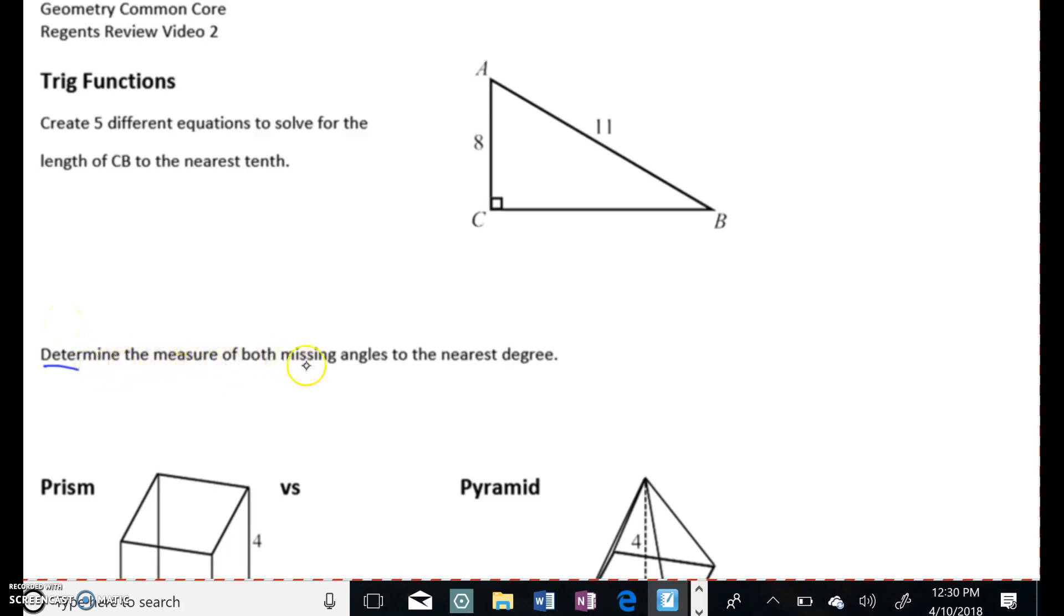So first thing, determine the measure of both missing angles to the nearest degree. So I'm given this right triangle ABC. C, I know, is 90 degrees based on our little box there. I'm given the length of AC is 8, the hypotenuse AB is 11. But I do not know the measure of angle A, and I do not know the measure of angle B.